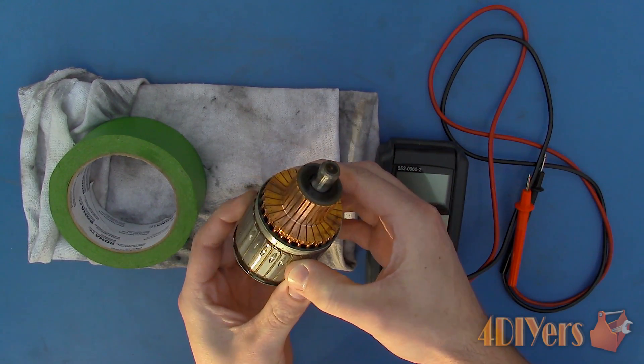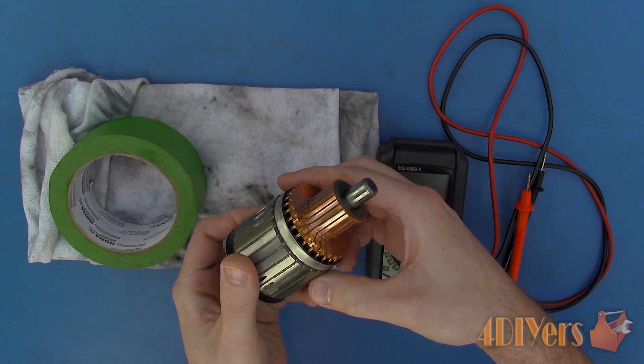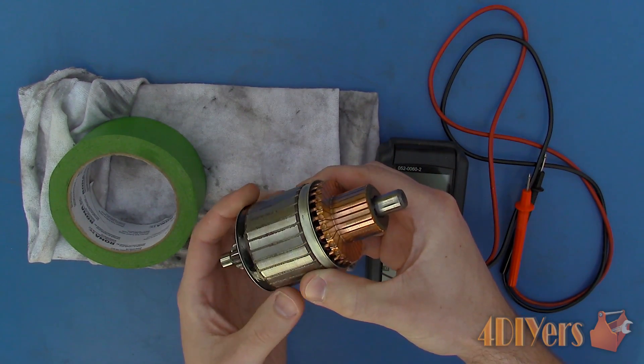There are three tests which can be done to determine if there is a fault in the armature, which would result in it not functioning correctly or not working completely.